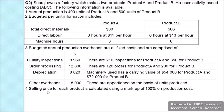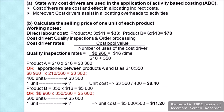The selling price for each product is calculated using a markup of 100% on the production cost. In part (i) of the question we are asked to state why cost drivers are used in the application of activity based costing, ABC.